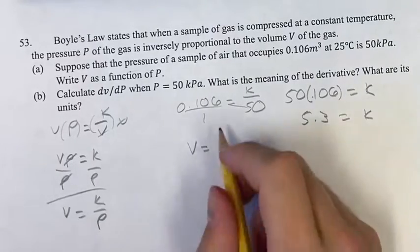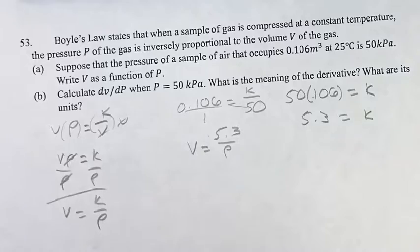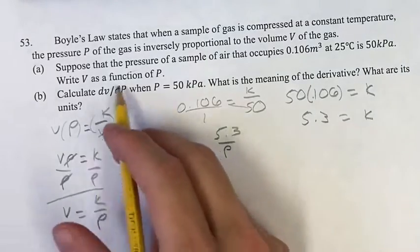So V equals 5.3 over P. This is V as a function of P, and we want to calculate the derivative.